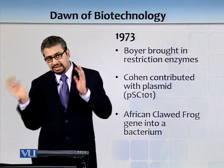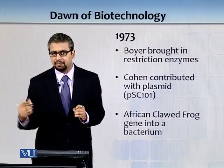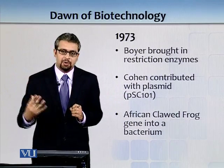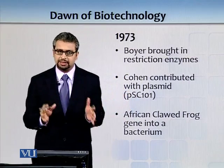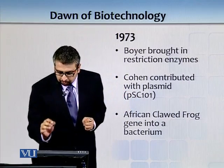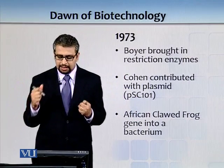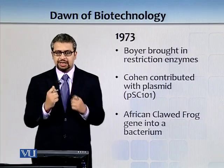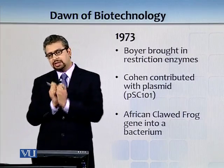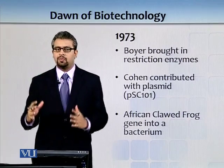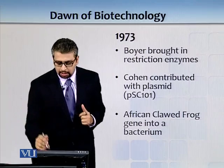In nature plasmids have various functions, but in genetic engineering they have been used to confer antibiotic resistance to strains so we can isolate and use them. Cohen contributed plasmid PSC-101, and together they introduced a gene from an African clawed frog into a bacterium — the first major breakthrough where a gene from one species was cloned into a bacterium.